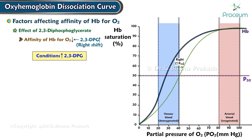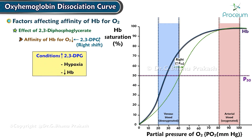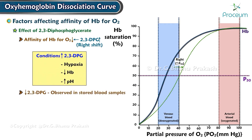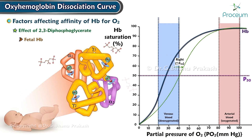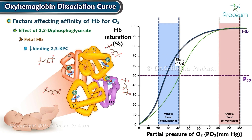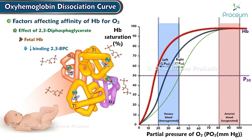Conditions that increase 2,3-diphosphoglycerate include hypoxia, decreased hemoglobin, and increased pH. Decreased levels of 2,3-diphosphoglycerate are observed in stored blood samples, which may present a problem to transfusion recipients because of the greater affinity of hemoglobin for oxygen, inhibiting the unloading of oxygen to tissues. Fetal hemoglobin has reduced binding to intracellular 2,3-diphosphoglycerate, which results in a left-sided shift of the oxygen-hemoglobin dissociation curve.